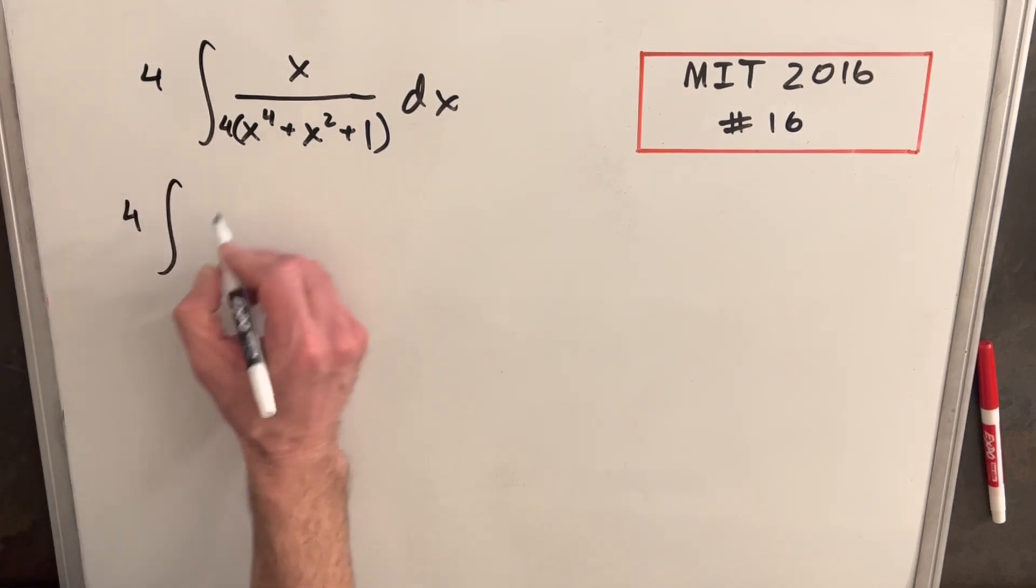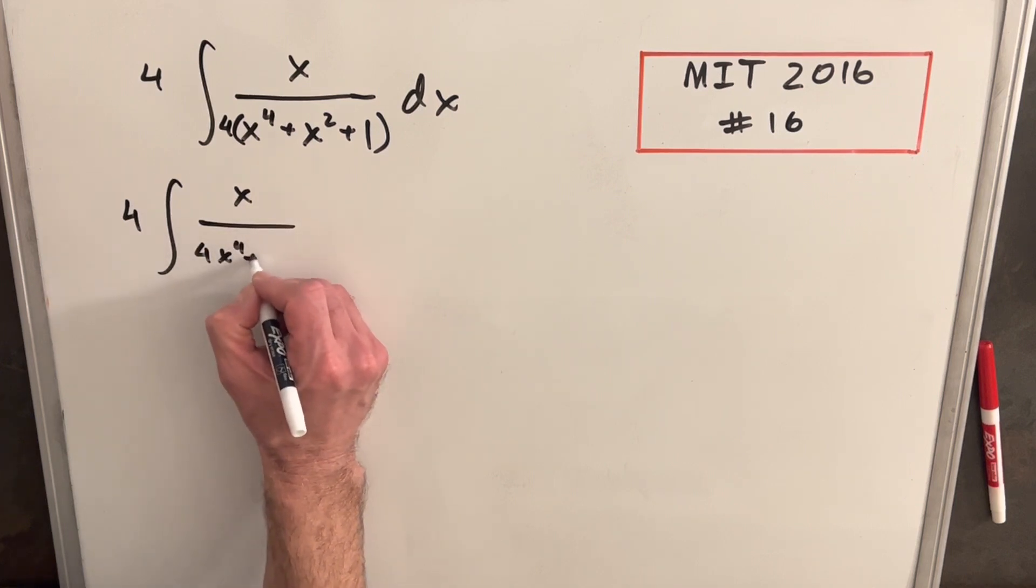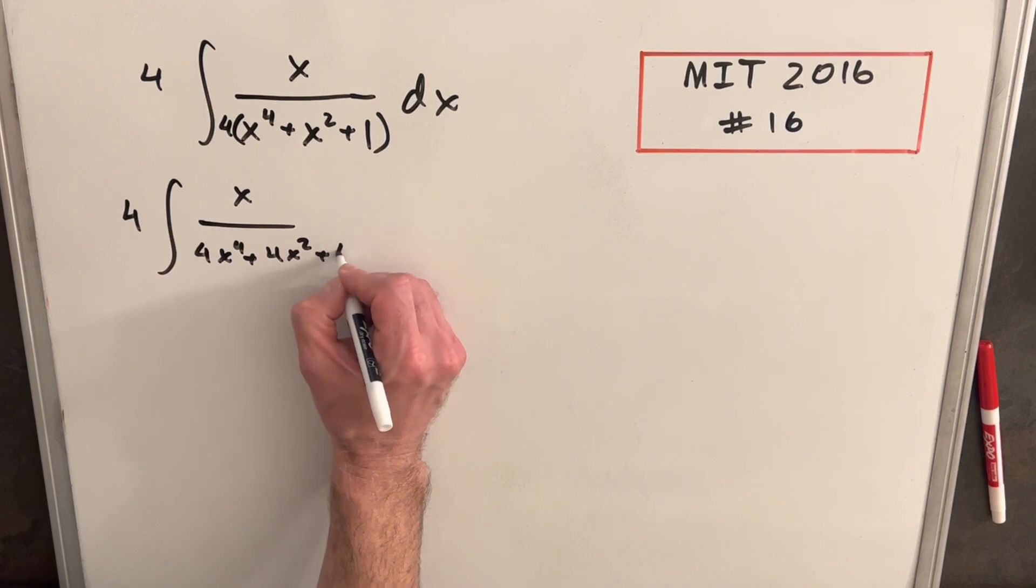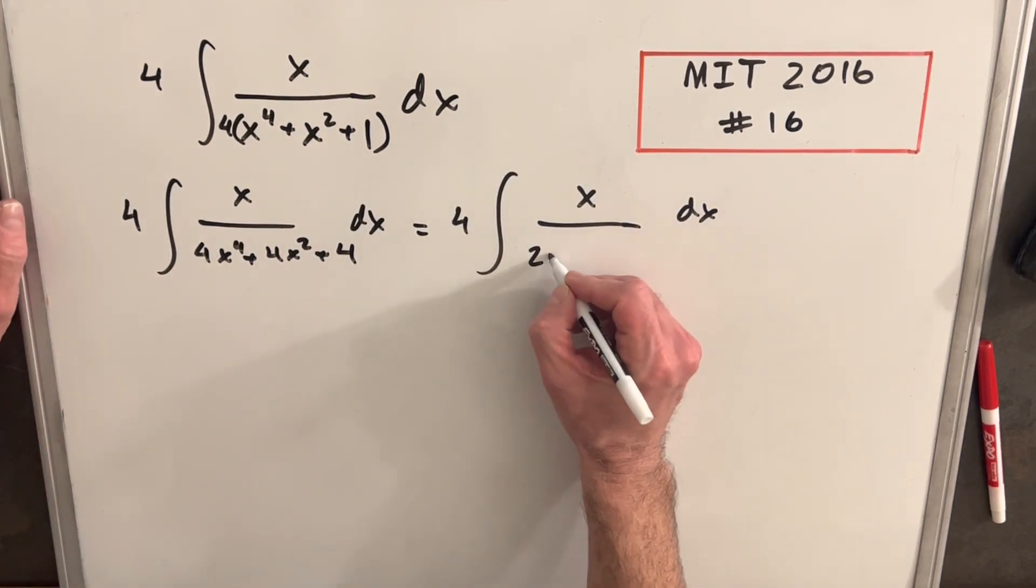So we'll rewrite this, and we'll distribute in this 4. So we're going to have 4x to the 4th plus 4x squared plus 4. Then, looking for the square root of this first term, we're going to use a 2x squared.